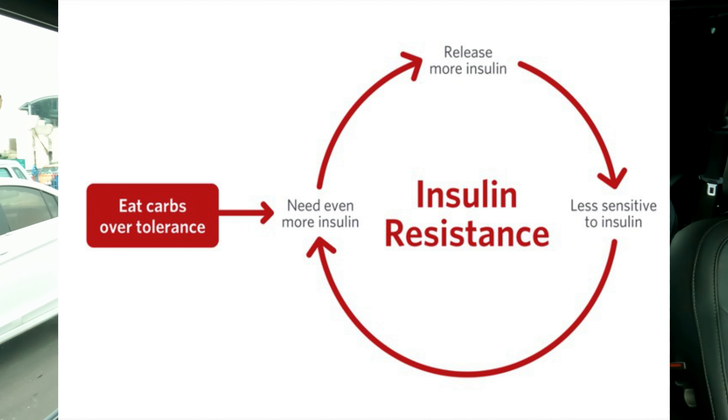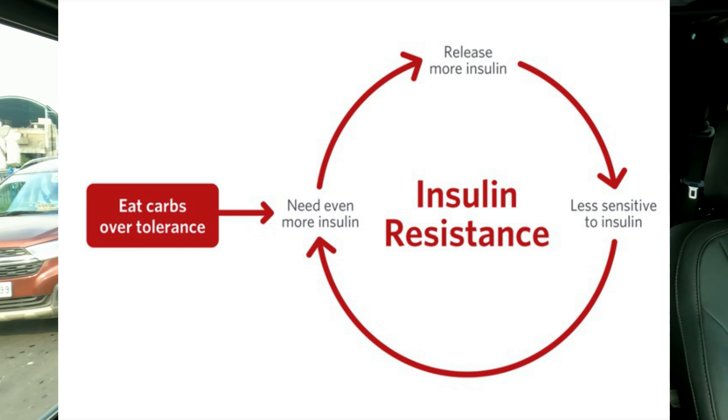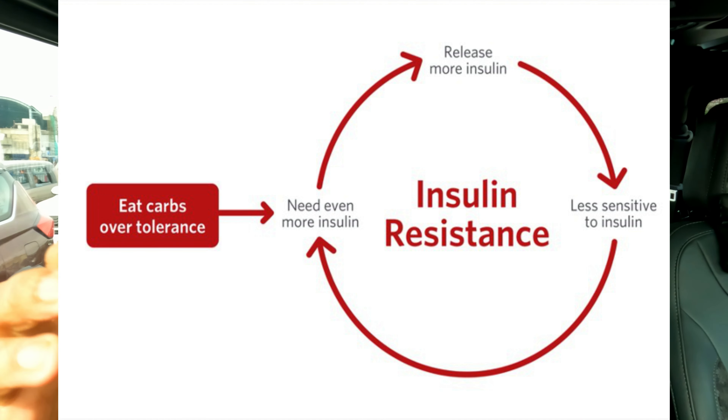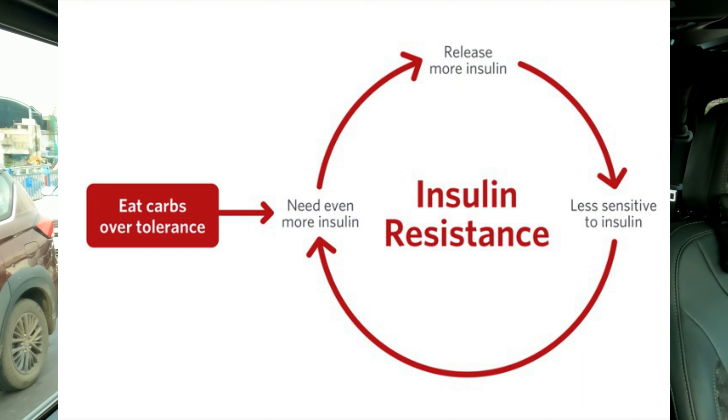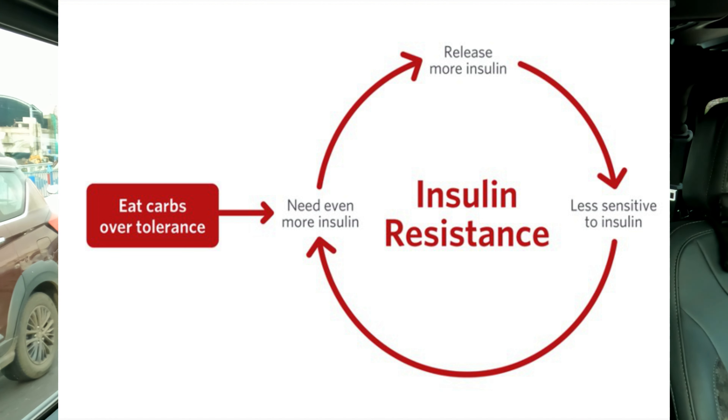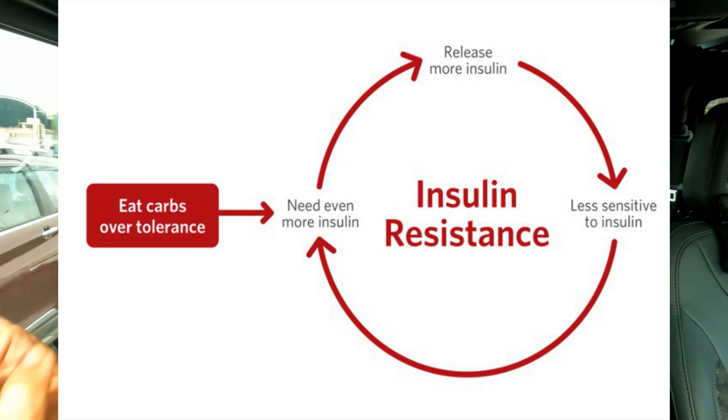Now you must be wondering — doesn't the brain need glucose, given that carbohydrates break down into glucose? Don't other cells in the body need glucose as a fuel? The answer is yes, but the question is how much. To maintain a blood glucose level of around 90 to 100 milligrams per deciliter, all you need is 4.5 to 5 grams of glucose, which is just a teaspoon full. And even that amount can be manufactured by the liver by a process known as gluconeogenesis. Neo means new and genesis means to make.